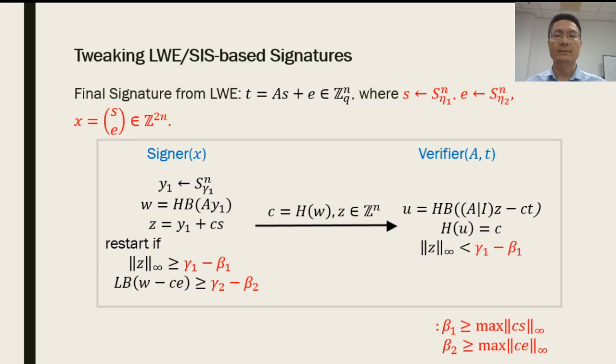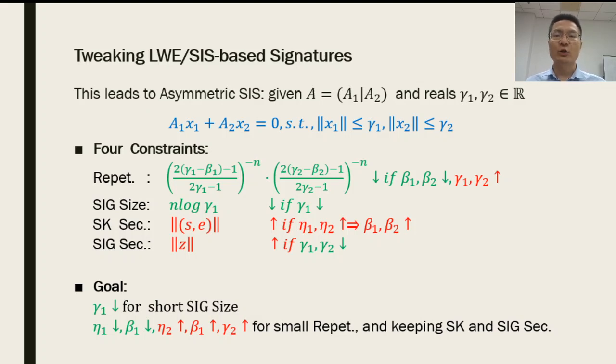To fully utilize this feature, we also switch the standard LWE problem to its asymmetric version, such that the secret S and E are chosen from distributions with different parameters eta1 and eta2. This allows us to use different beta1 and beta2 for rejection, where beta1 is the maximum size of c times x, and beta2 is the maximum size of c times E. For security, in addition to the asymmetric LWE, we also need the asymmetric variant of SIS, which basically splits the solution into two parts and puts different constraints, gamma1 and gamma2, on the two parts. By doing this, the expected number of repetitions basically has two independent parts.